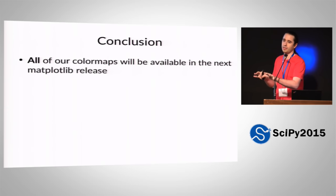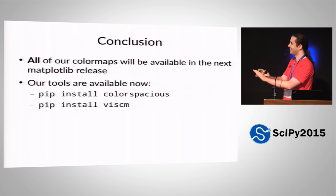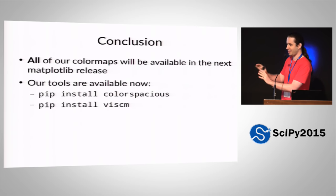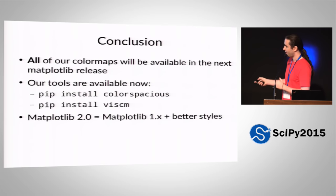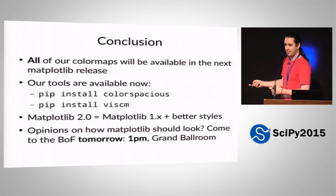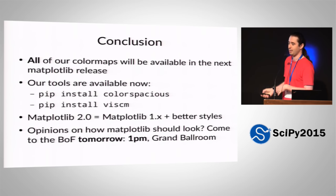All of our color maps will be available in the next release — please don't tell me you should have chosen the second one instead; you can have all of them. We just need to pick a default. We need names, but we want to get it finalized before naming things. Matplotlib 2.0 is coming out in a few months. It will be essentially the same as the previous release except with better styles, a new default color map, and probably other improvements too. If you have opinions, we'll have a BOF tomorrow at 1pm to discuss how Matplotlib should change its defaults to be better for everyone.